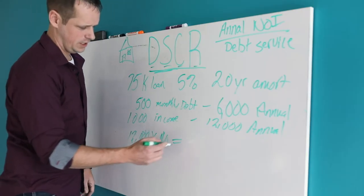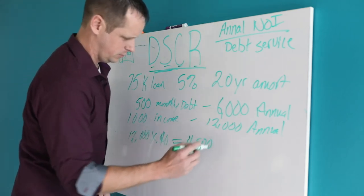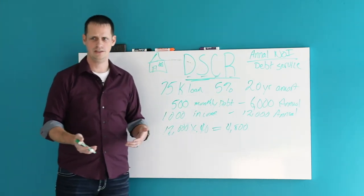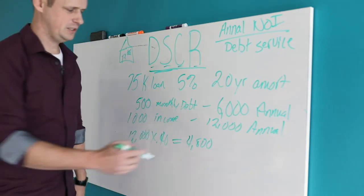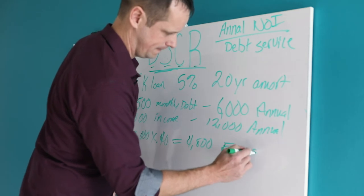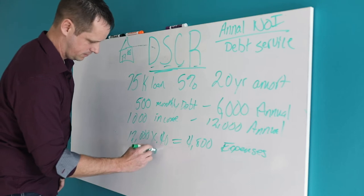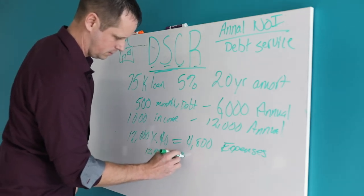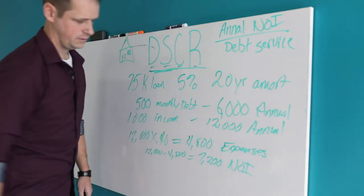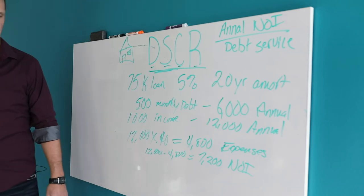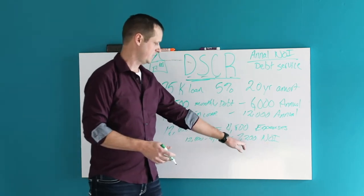So you've got $12,000 times 0.4. This is the rough number that I calculate for expenses. A lot of times you're going to have expenses that total up to around 40%, give or take. So times 0.4 gives you $4,800 for your total expenses. So to get your annual NOI, you take your income minus your expenses. $12,000 minus $4,800 gets you $7,200 NOI.